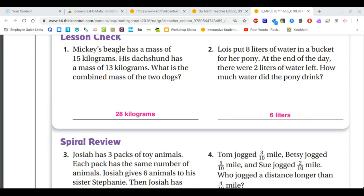When we see that Lois put eight liters of water in a bucket and at the end of the day there were two liters left, that word left tells us that we need to subtract. So eight minus two is six liters.